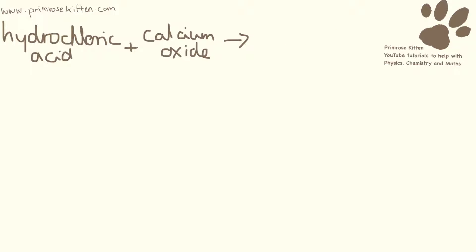Hydrochloric acid and calcium oxide. Again, salt and water formed. Hydrochloric acid forms metal chloride salts. Our metal in this situation is calcium. So that will be calcium chloride plus water.